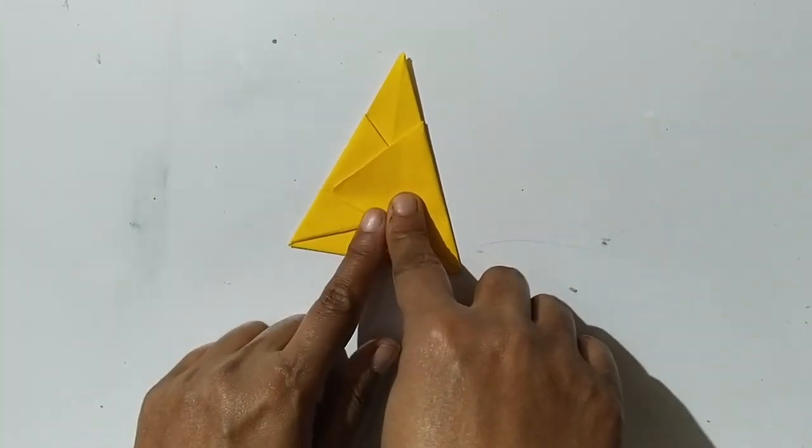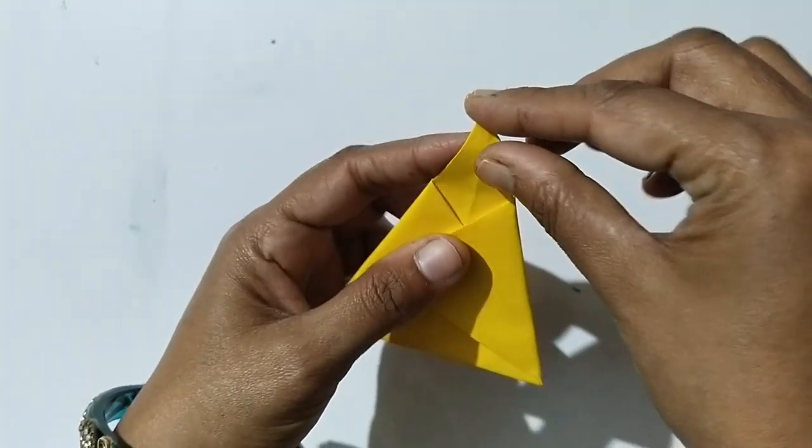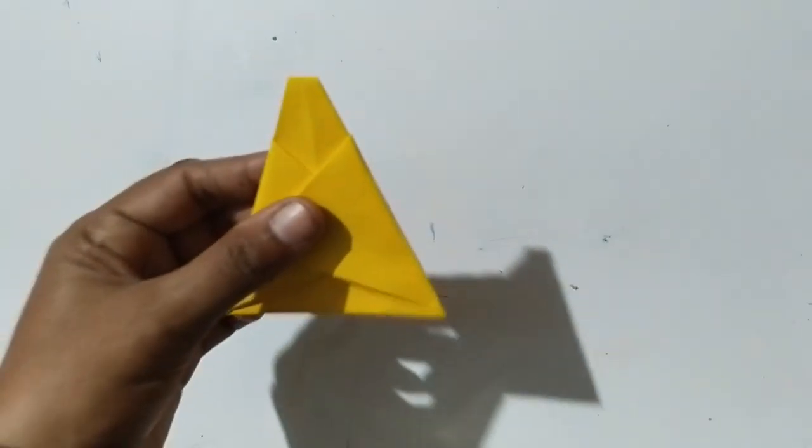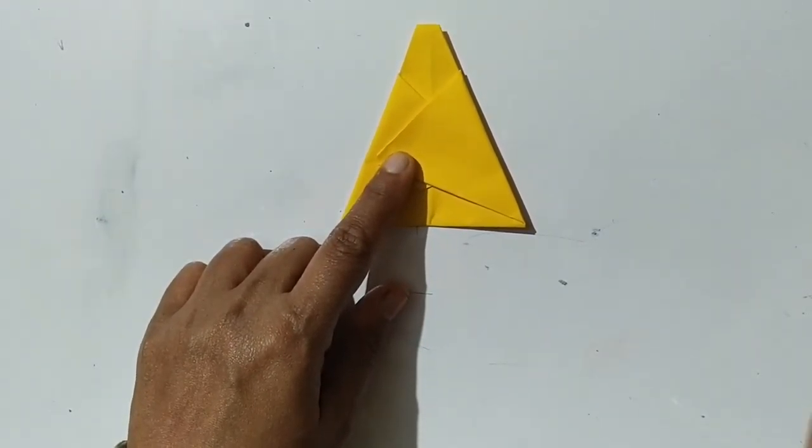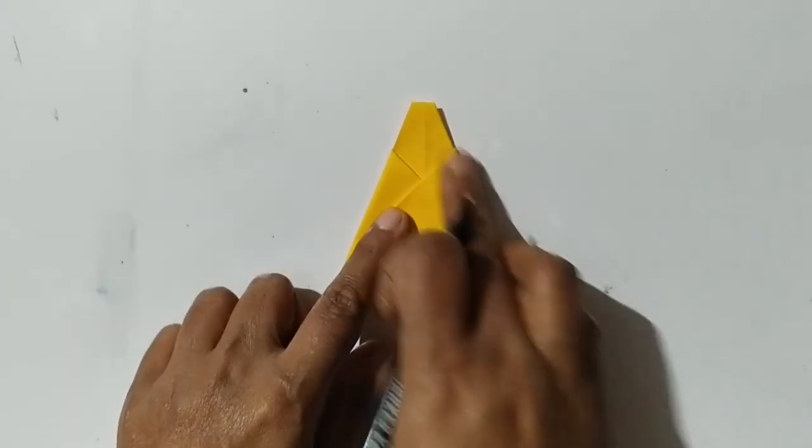Then turn the tip backwards, a small tip. Then take a sketch pen and draw eyes, nose, hair, and a smiling mouth.